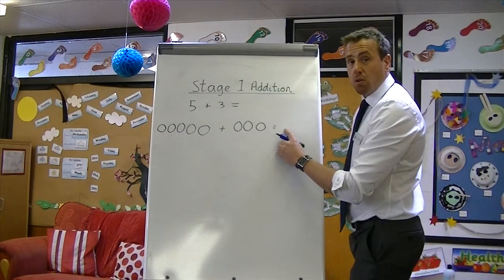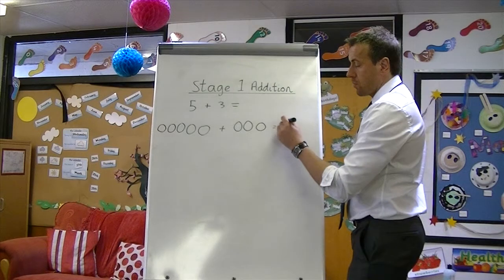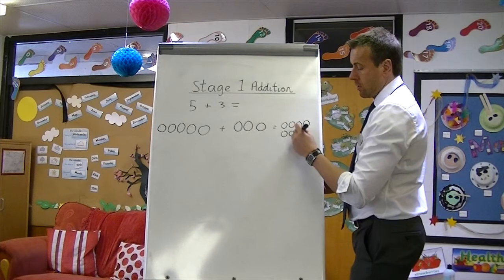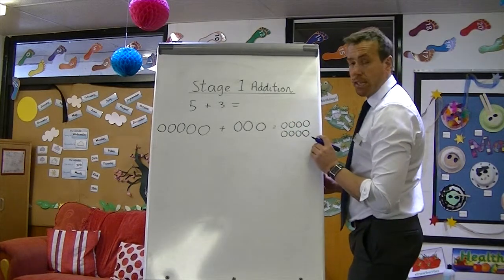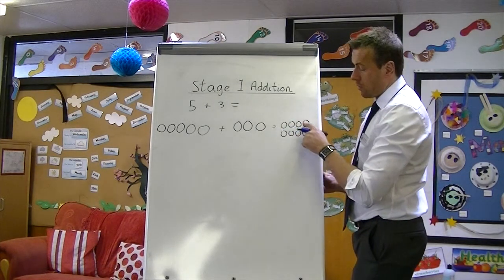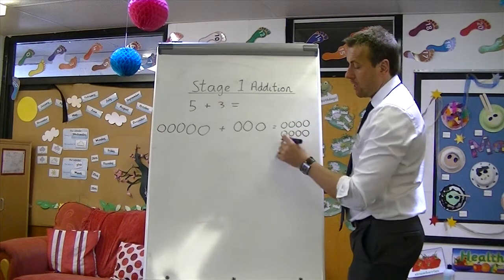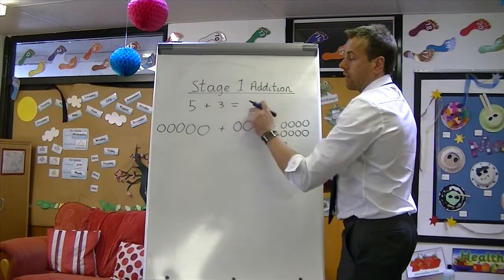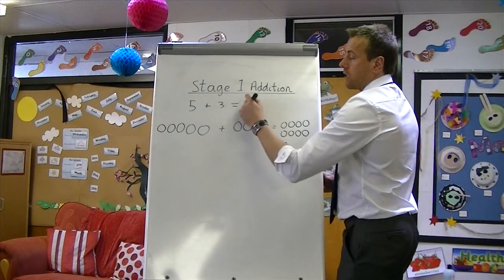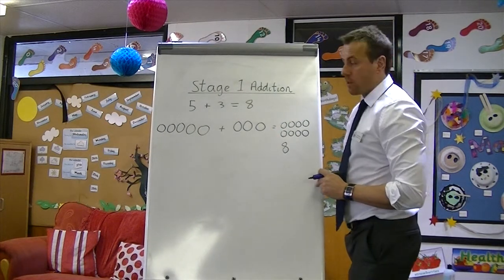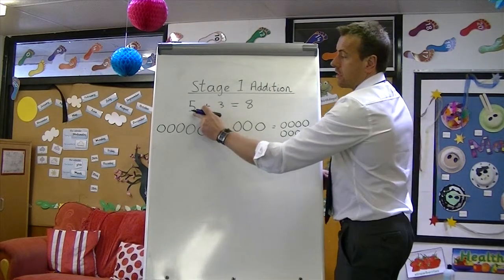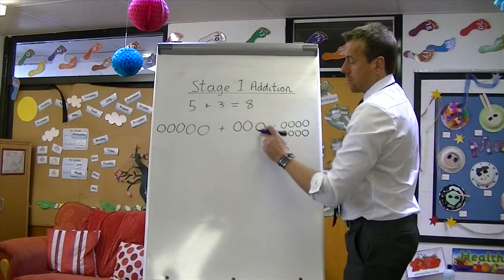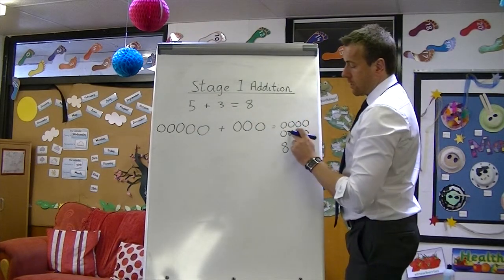So they could then draw 8 circles. Ideally, count those: 1, 2, 3, 4, 5, 6, 7, 8. Check. And then write the answer at the end. So 5 add 3 equals 8 — complete the number sentence. It's good practice through school. Make your children check again: 5, 3, 8.